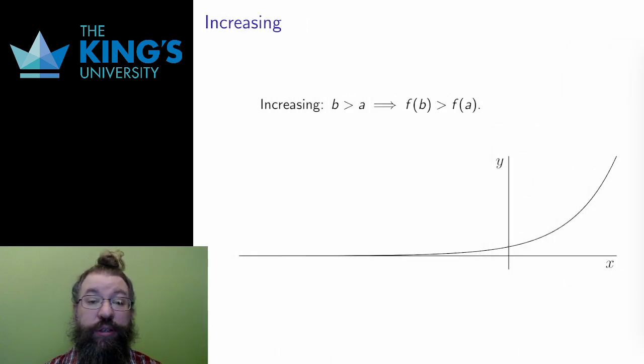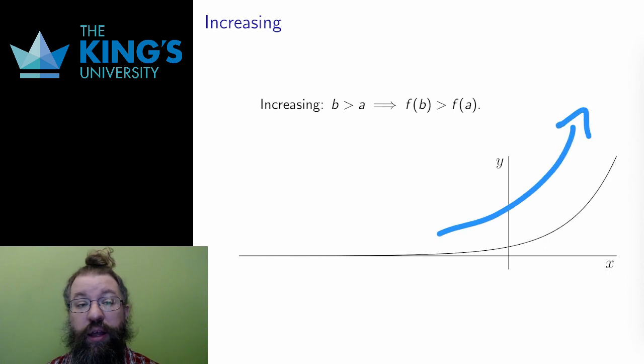A function is increasing if it is growing. Algebraically, this means if one input is greater than another, b greater than a, then the same is true for the output, f of b greater than f of a. Visually, the graph is simply going up.